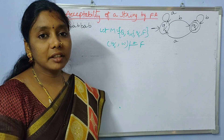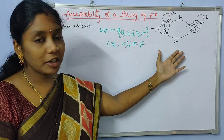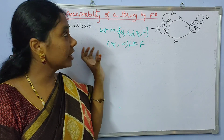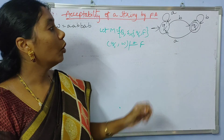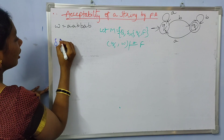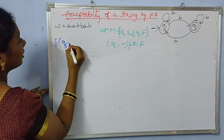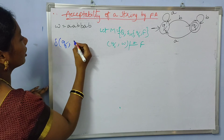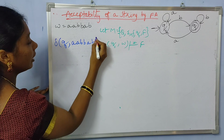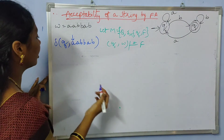Let us consider an automata and a string, and check the acceptability of that string in the finite automata. We start from the initial state and consider the entire string, which is a a b b a b. Initially, we need to process the first input symbol, which is 'a'.